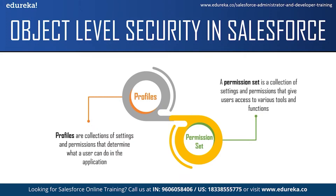There are two ways of setting object permissions: profiles and permission sets. Profiles are a collection of settings and permissions that determine what a user can do in the application — what data and features they can access. For example, a sales representative will have a sales profile and can only access objects needed for daily tasks, not objects a developer uses. Permission sets extend user functional access without changing a profile, providing additional access to objects.